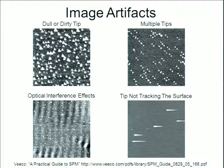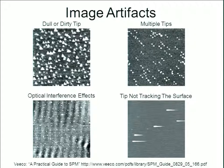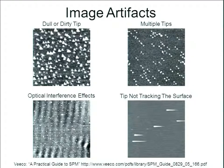Another example: a contaminated or slightly chipped tip can cause tip doubling or even tripling. When scanning across a sample — say, 10 gold nanoparticles on the image — since you have a tip contaminated enough to cause tip doubling, you're going to see twins and a doubling of the true particles that were there. About two-thirds of the particles visible are not actually present on the sample.